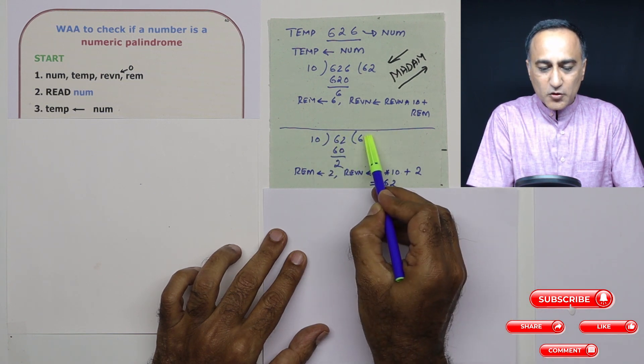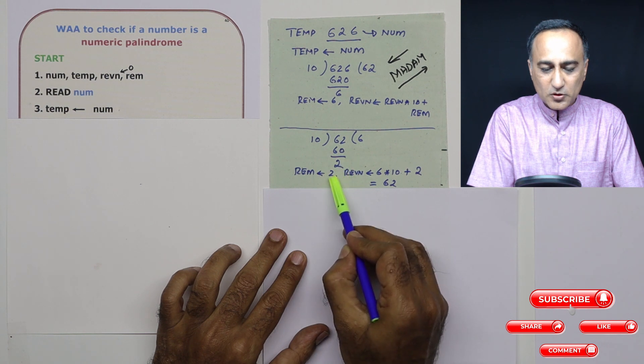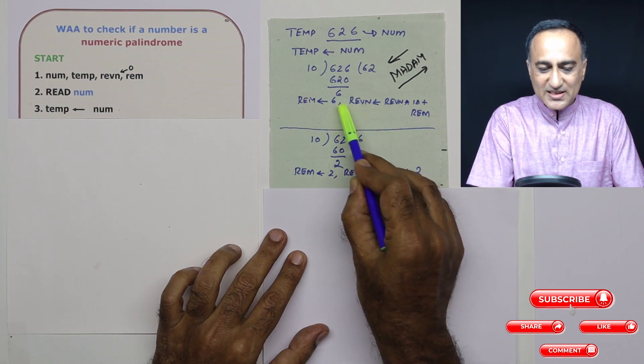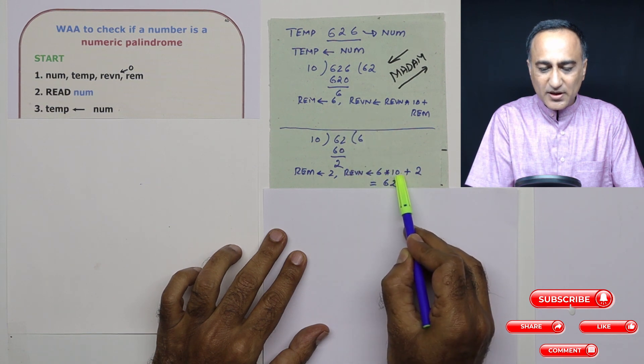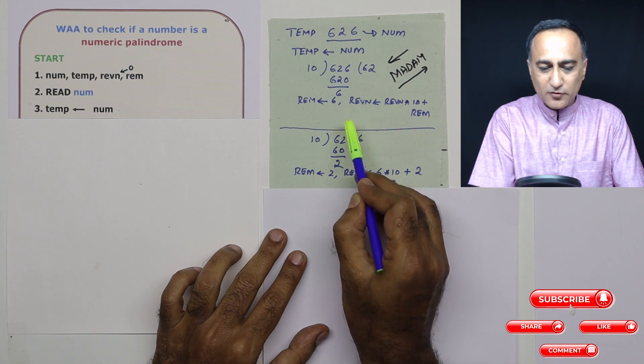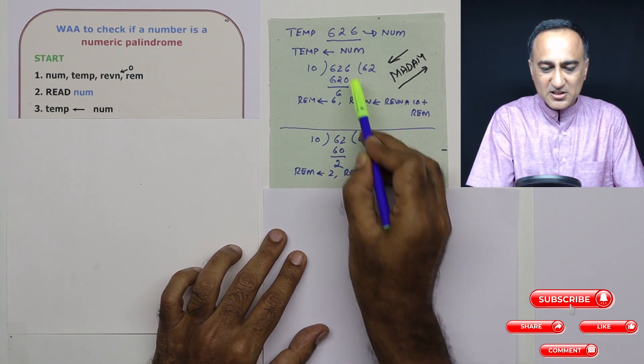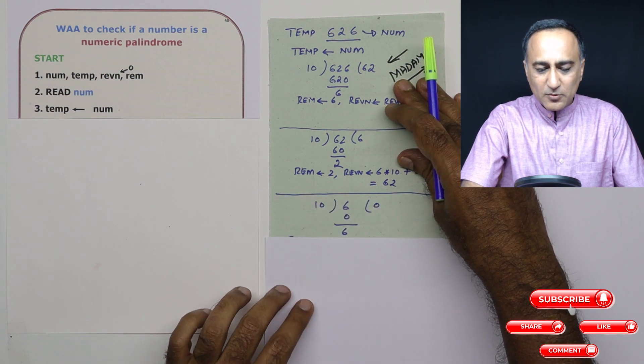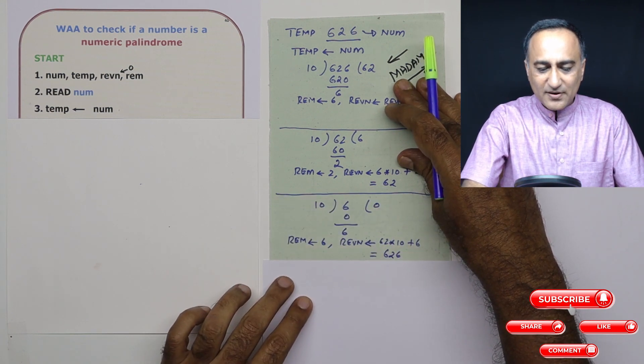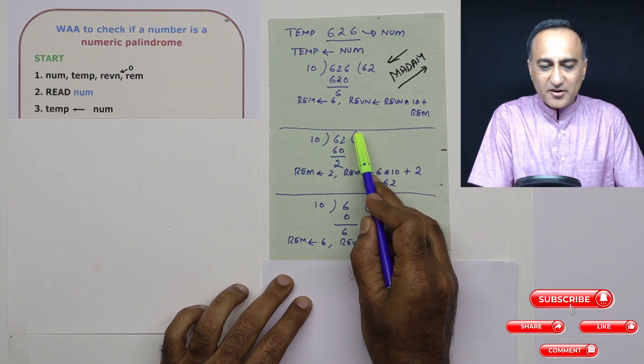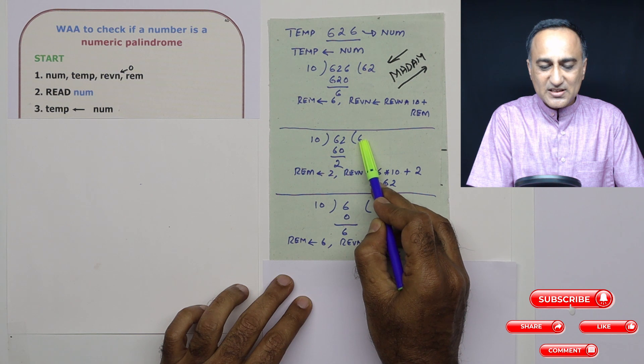62 divided by 10, the quotient is 6, remainder is 2. So, 2 is assigned to the remainder. Now reverse number was 6, the last remainder 6 times 10 is 60 plus 2, which is 62. So far we have got this number 62 in reverse. We are perfectly fine. Now what I've done before the last step is I've taken 62 divided by 10 and assigned it to temp. So temp is now just 6.